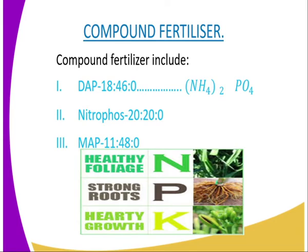We have compound fertilizer, which is an example of inorganic fertilizer. A compound fertilizer is one that contains two or more primary macronutrients, as discussed in previous lessons. Examples of compound fertilizer include: DAP — di-ammonium phosphate, whose formula is shown on screen; nitrophos, with a fertilizer ratio of 20:20:0; and mono-ammonium phosphate, whose ratio is also shown. These compound fertilizers contain the elements NPK — nitrogen, phosphorus, and potassium.